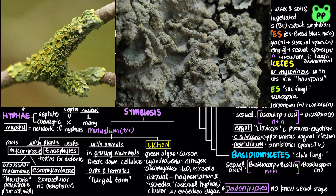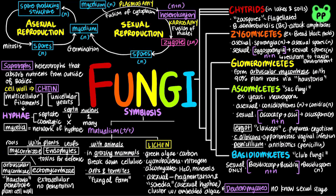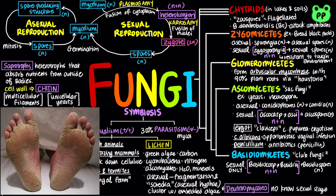Lichens are important pioneers on new rock and soil surfaces. About 30% of known fungal species are parasites, mostly on or in plants. The general term for a fungal infection in animals is mycosis. For example, athlete's foot is a common skin infection of the feet caused by a number of different fungi.